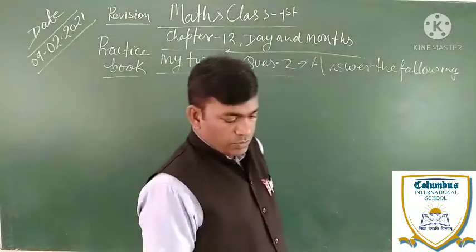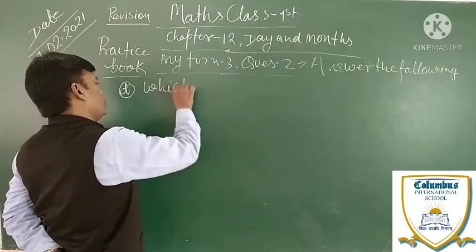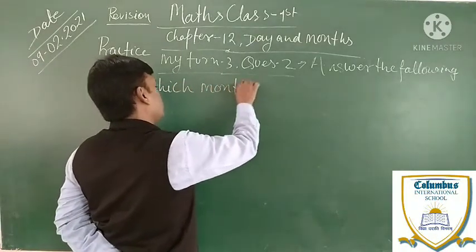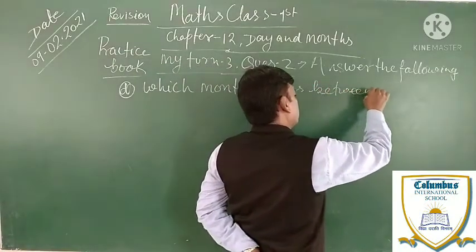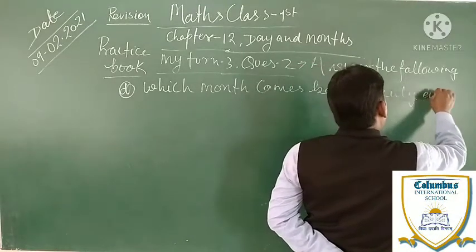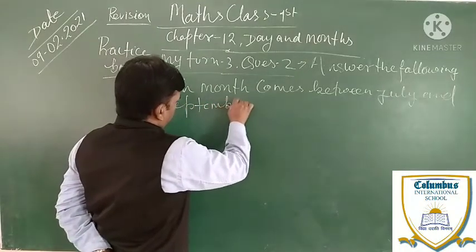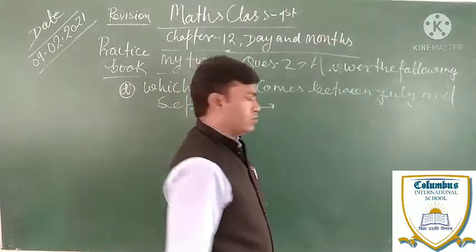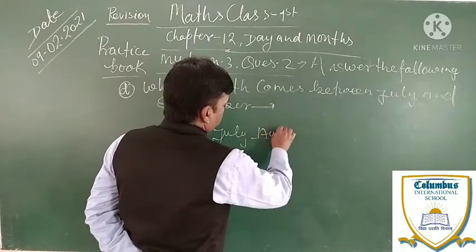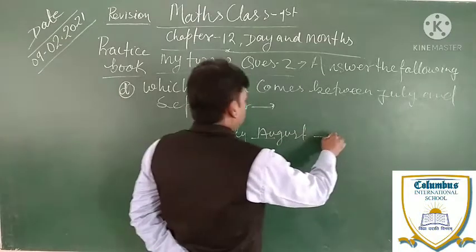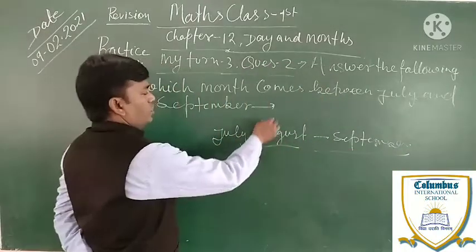Next question: which month comes between July and September? Tell me. Very good! July, August, then September — so here the answer will be August.